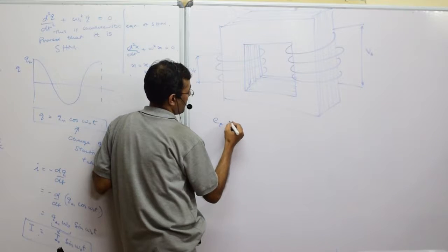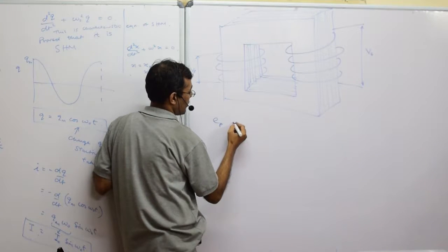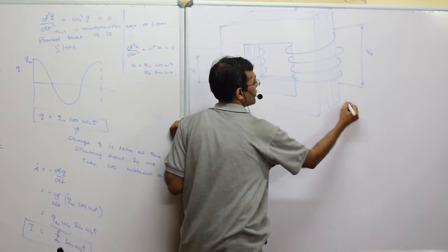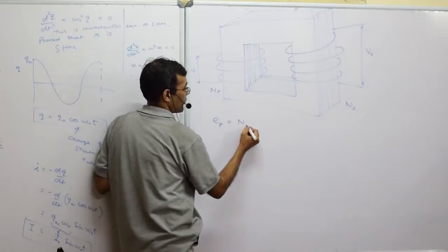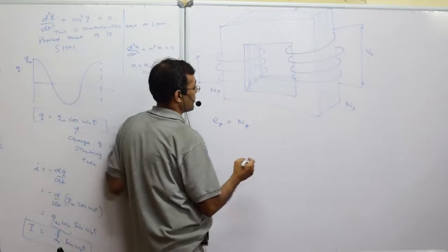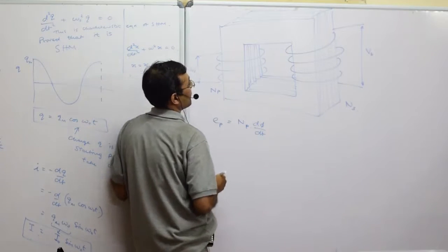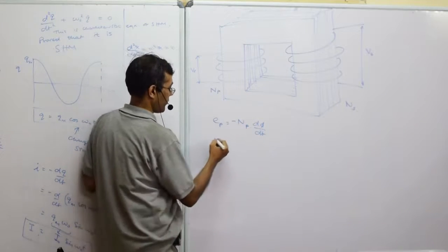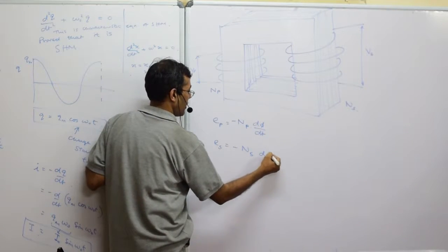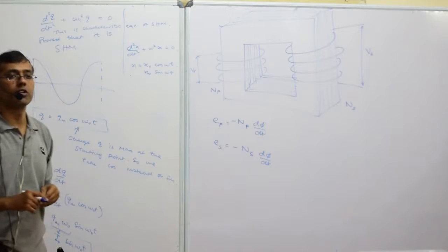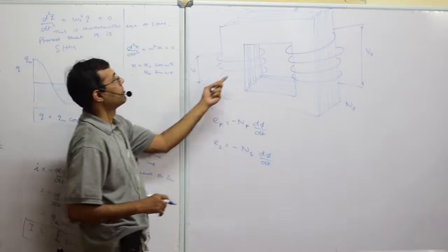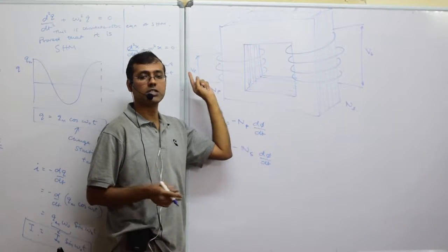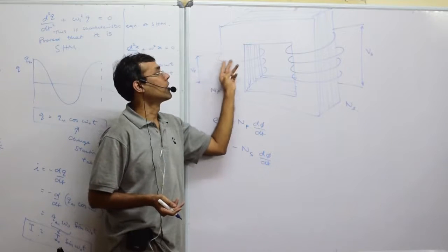The EMF generated in the primary is proportional to N1 — the number of turns on the primary side, and N2 the number of turns on the secondary side. According to Faraday's law, the EMF on one side is N dΦ/dt, minus because of Lenz's law. Similarly, Es is going to be minus Ns dΦ/dt. The working principle here is that there is alternating current on the primary side — note the word alternating — because DC current will not produce any changing current, which means there is no change in magnetic flux, and no current is induced on the other side.